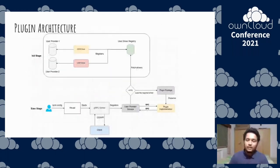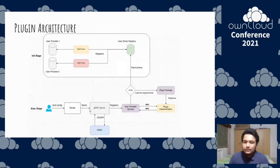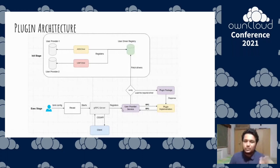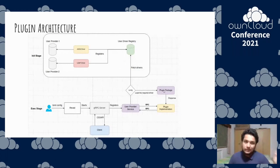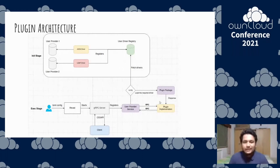This is a high-level picture of the plugin architecture. The user configures the Reva daemon using a normal configuration file. The Reva daemon starts a gRPC server and, based on the configuration, starts the requested service — let's say the user provider service. That service then has two options: it can fetch drivers from a global registry populated at the init stage (the old method), or it can call the plugin package, which dispenses the plugin and communicates with it via RPC using the HashiCorp plugin framework.